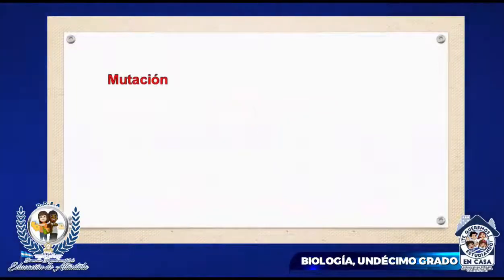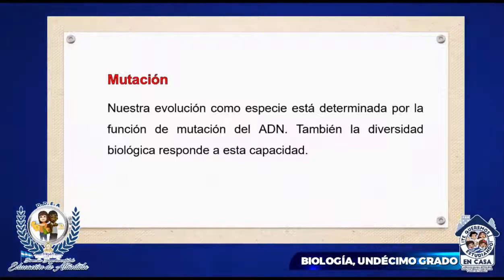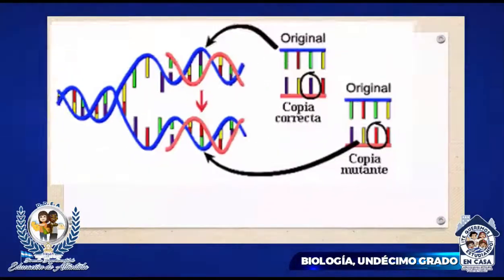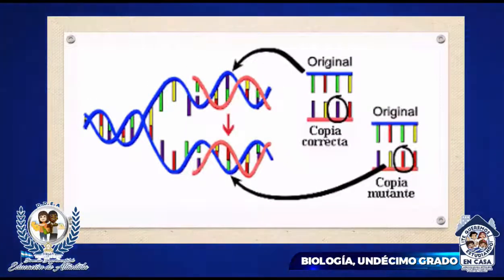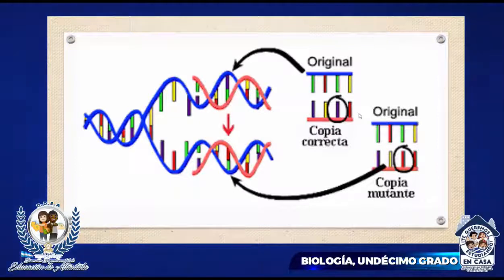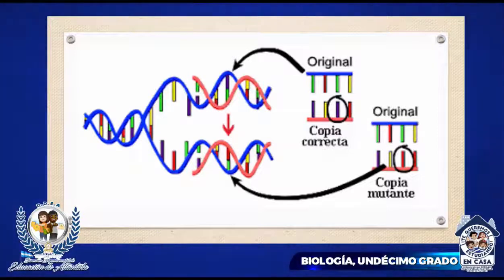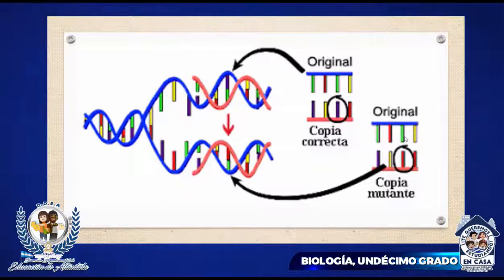Mutación. Nuestra evolución como especie está determinada por la función de mutación del ADN. También la diversidad biológica responde a esta capacidad. Podemos observar en esta imagen cómo se da la mutación: esta es una cadena original; aquí tenemos una copia correcta y exacta a la original. Sin embargo, aquí abajo tenemos la cadena original y una copia mutante, porque cambió una base. Lo que está encerrado es de un color diferente, lo que significa que ahí ya hubo una mutación.